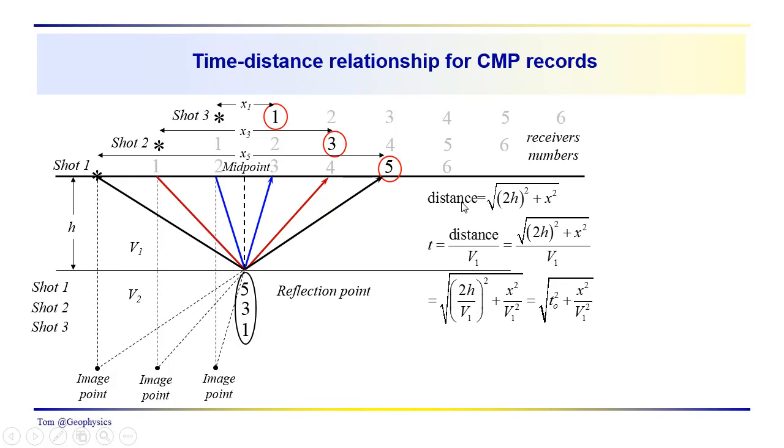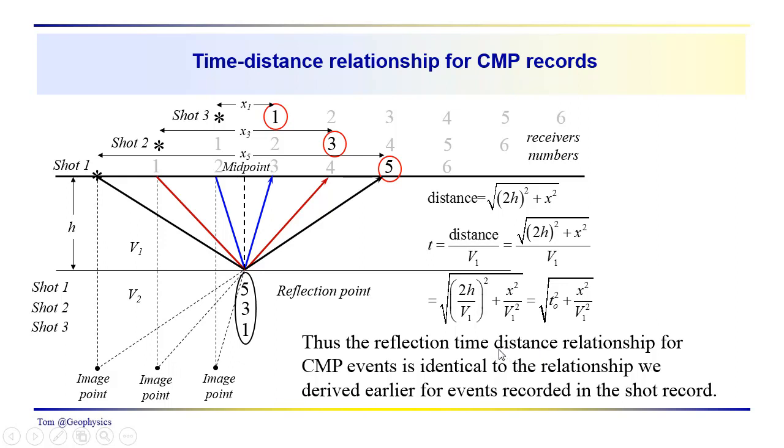So the distance, the analysis that we went through before, we just have this side of the triangle squared plus this side of the triangle squared, 2H squared plus X squared, square root of that is equal to the distance. The time is just equal to distance over V1 or the square root of 2H, the quantity squared plus X squared over V1. And then we can bring that V1 into the square root, into the radical. So we have 2H over V1, the quantity squared plus X squared over V1 squared. Remember this 2H over V1 is just T0. So we have T0 squared here. So the takeaway from this is that the reflection travel time distance relationship for the events that are recorded in a common midpoint record, it's identical to what we had for the individual shots. So we just have this hyperbolic relationship.